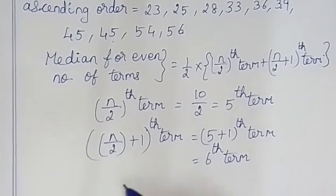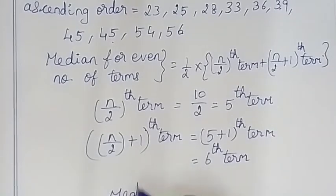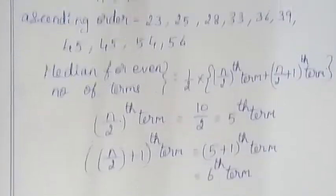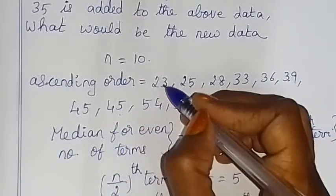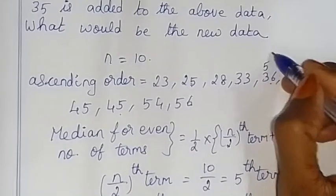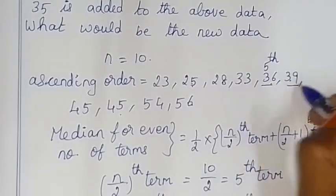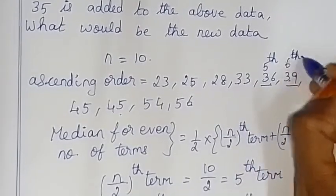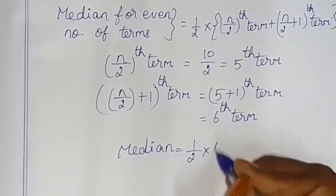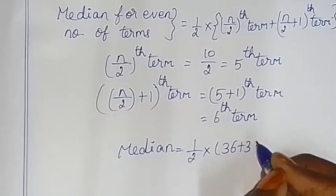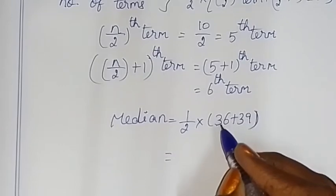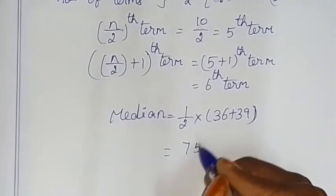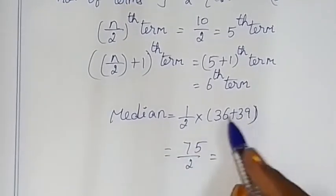Median = half of (5th term + 6th term). Counting: 1, 2, 3, 4, 5 — 5th term is 36, and 6th term is 39. So median = half of (36 + 39) = 75/2 = 37.5.